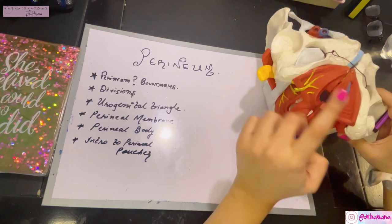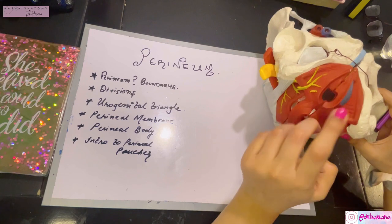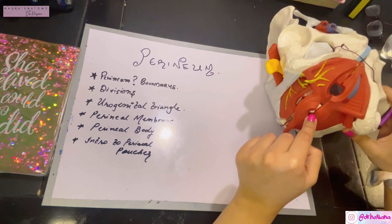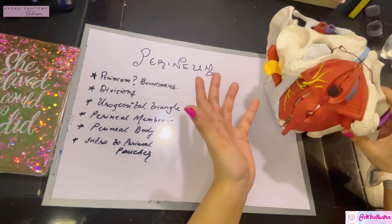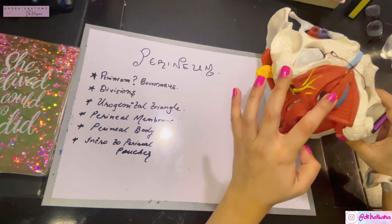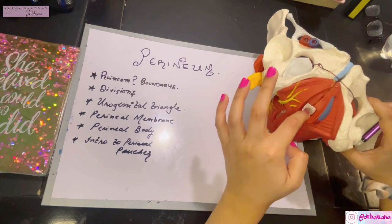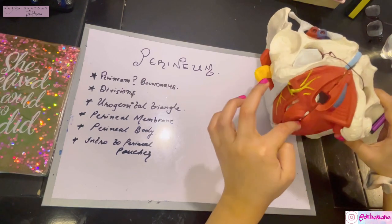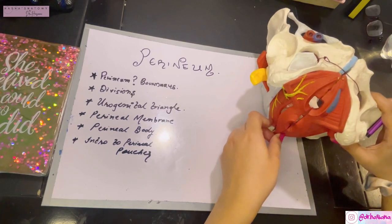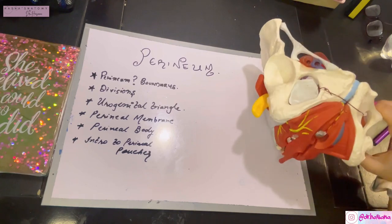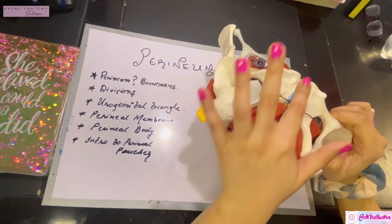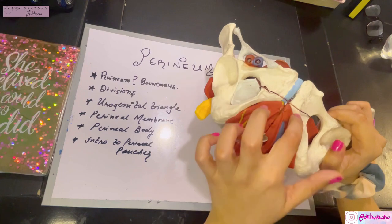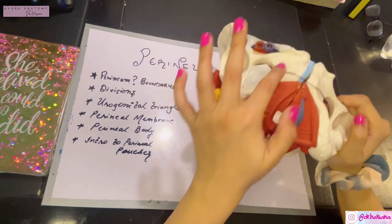In males, the perineum consists of two openings: one for the urethra and one for the anal canal. In females, there are three openings — one for the urethra, one for the vagina, and one for the anal canal. The perineum is basically a diamond-shaped structure.